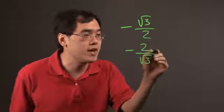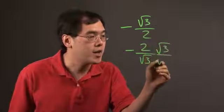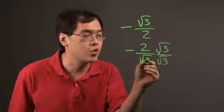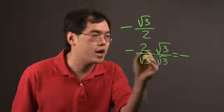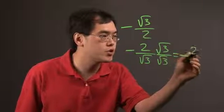What that means here is you have to multiply the top and bottom by the denominator, square root of 3. So here's what happens. You have the negative still. You multiply across. 2 times square root of 3 is going to be 2 square root of 3.